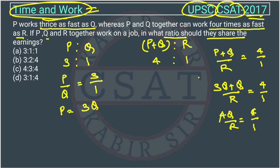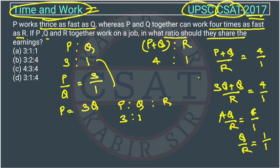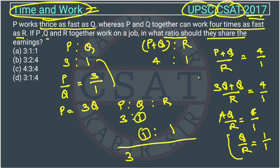This gives 4Q upon R is equal to 4, so the 4 cancels and Q upon R is equal to 1. P:Q is 3:1 as given, and Q:R we calculated is 1:1. Since Q values are the same, the combined ratio is 3:1:1.